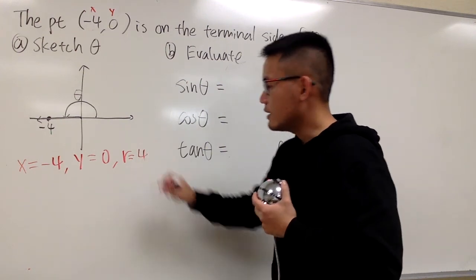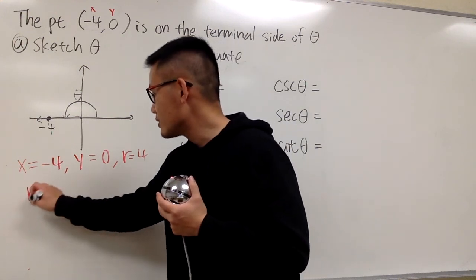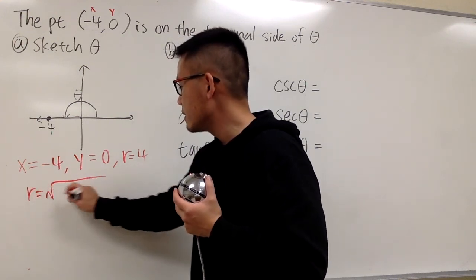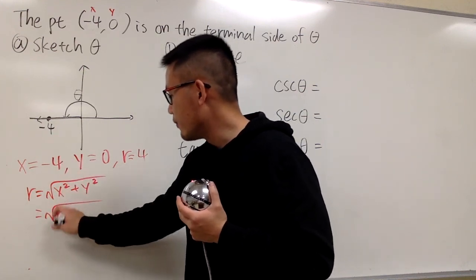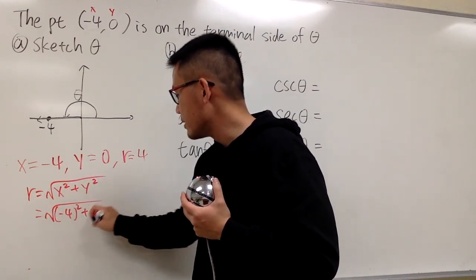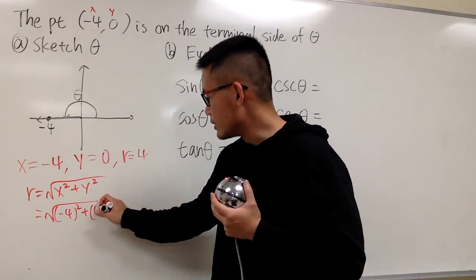So let me write this down, and I will show you with a computation from the formula if you like. You can also use r = √(x² + y²), and this is equal to square root of x is -4, square that, plus y is 0, and square that.